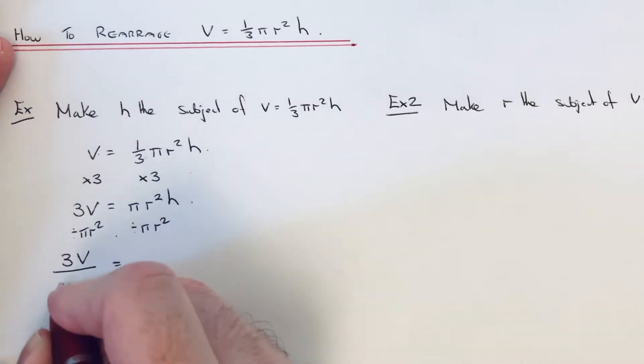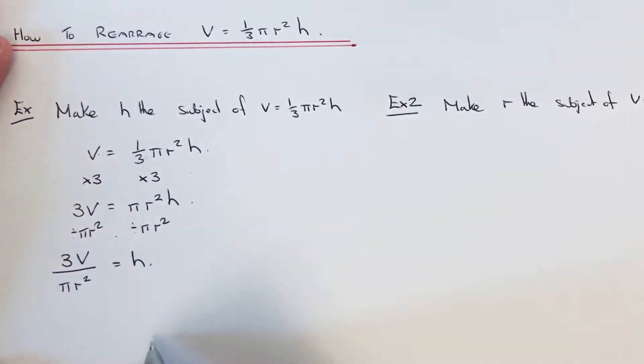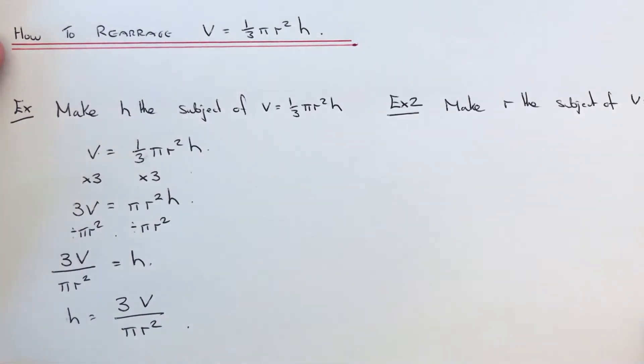We've now made h the subject. If we just put it the correct way with the h on the left-hand side, that is our formula for the height of the cone.